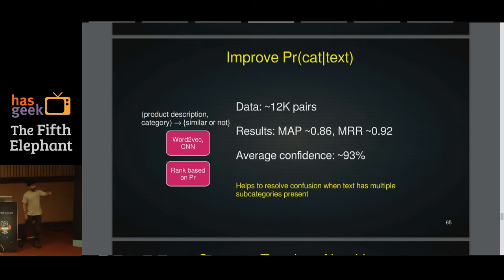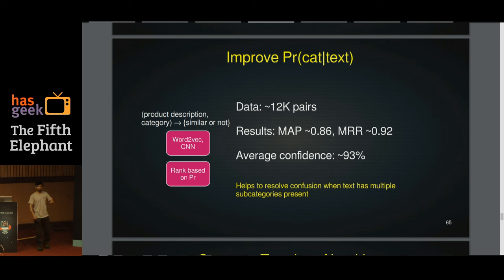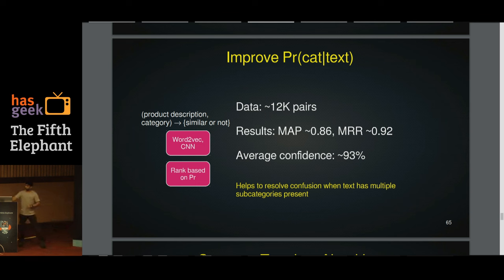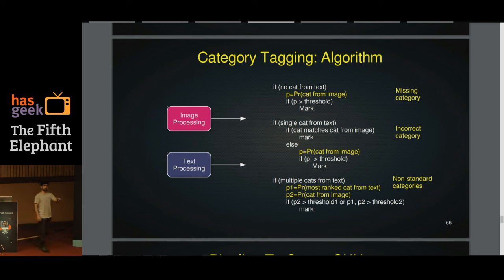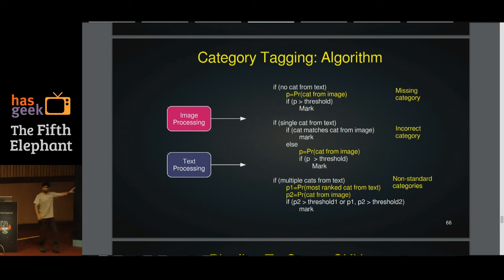With about 12,000 pairs as input, we received a mean average precision of about 86% and a mean reciprocal rank of 92%, which is quite good. If you give only about 5,000 pairs, these numbers will be much lower. Now we know how to process text and handle multiple categories, so we can go back and rank categories by text when multiple are present — solving case three from the algorithm.